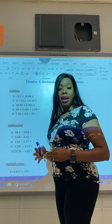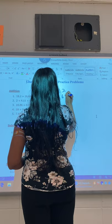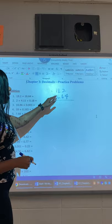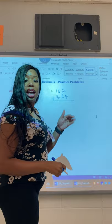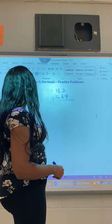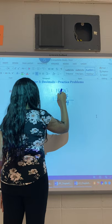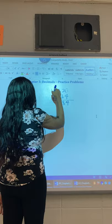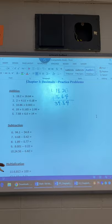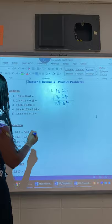For number one, I always want you to remember when you are doing addition and subtraction, always line up the decimals. 18.2 plus 16.64. That is 18 and two tenths, and 16 and 64 hundredths. Notice I don't have anything here so we can put in a zero. Zero plus four is four, two plus six is eight, eight plus six is 14 carry my one, one plus one is two plus the one I carry is three. So the answer is 34 and 84 hundredths.